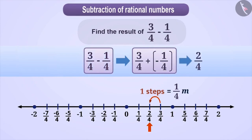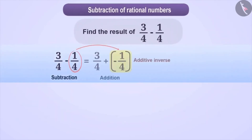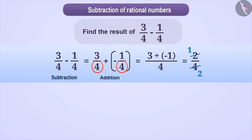The result of the subtraction can be obtained without a number line as well. It is also necessary to convert the operation of subtraction into addition. Then we see that the denominators are equal, so we keep the denominator as it is and add the numerators. This gives us a result of 2/4, which simplifies to 1/2.